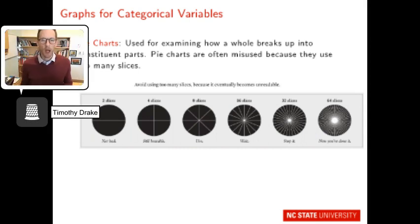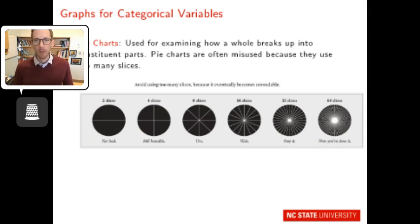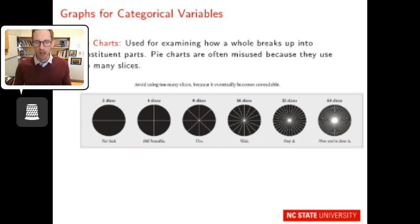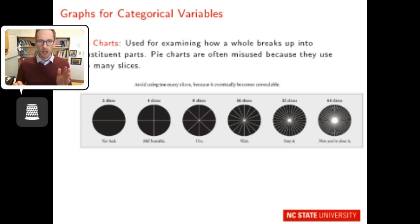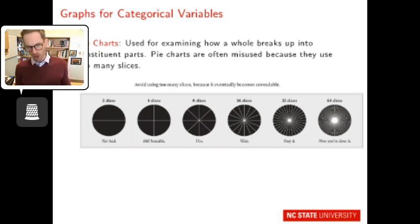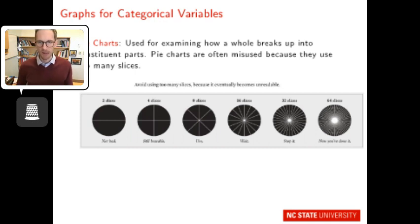A brief aside on pie charts: a pie chart is used to examine how the whole breaks up into its constituent parts. We often misuse it by including too many parts or trying to draw comparisons, which is not what it's for. Nathan Yao shows that two slices is fine, four is okay, eight is getting tricky, and anything beyond that — stop, we can't see what's going on. The next slide has more information on this.